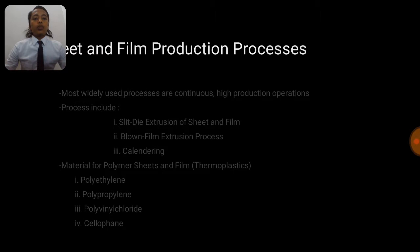The sheets and film production process: most widely used processes are continuous high production operations. This process includes, firstly, slit die extrusion of sheets and film, second, blown film extrusion process and third, calendaring. The material used for polymer sheets and film is mostly thermoplastic, with polyethylene, polypropylene, polyvinyl chloride and cellophane.